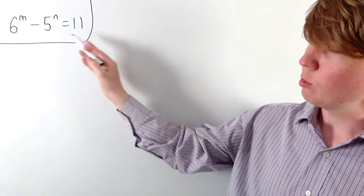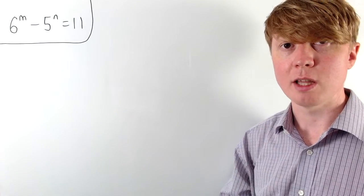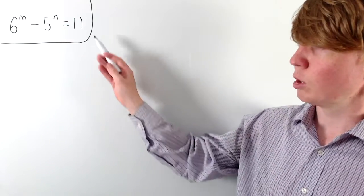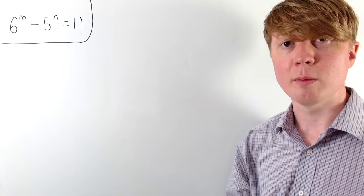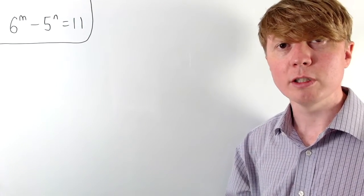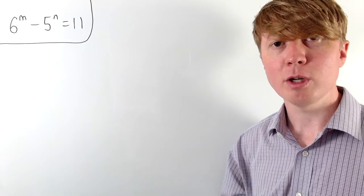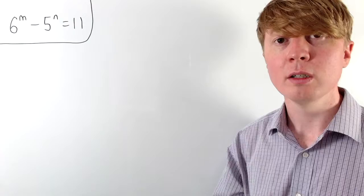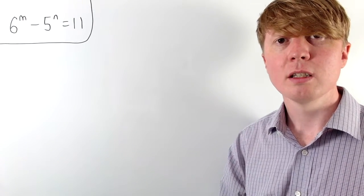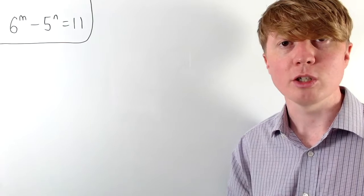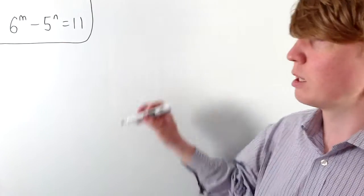Looking at the equation, it might be worth thinking about this modulo 11 to begin with, because then the right-hand side would just be equivalent to 0 mod 11, and we'd be looking for a power of 6 and a power of 5 which are equivalent to each other modulo 11. But for our solution, we're actually going to consider things modulo 24.